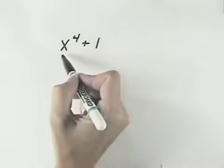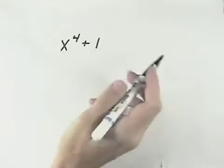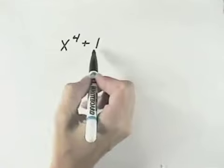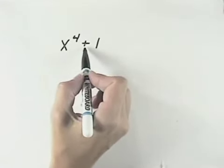So looking at this problem, we can see we have x to the fourth plus one. There is no greatest common factor, so we can't start there. Looking at the two terms, they're not perfect cubes, so it cannot be the sum of perfect cubes.